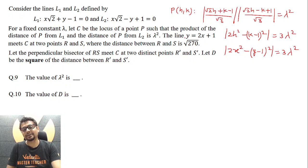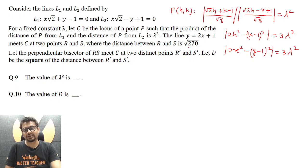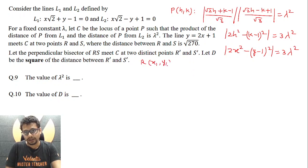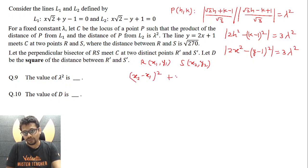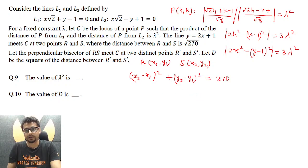Now it is given that the line y = 2x + 1 meets C at two points R and S, the distance between which is √270. So let R be (x₁, y₁) and S be (x₂, y₂). We have (x₂ − x₁)² + (y₂ − y₁)² = 270.